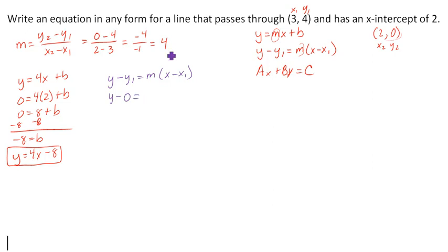So y minus 0 equals the slope, which I found before, times x minus x1, which is x was 2 for the point of 0. So x minus 2. So that is my equation in point-slope form. So I've now accomplished slope-intercept. I've accomplished point-slope.